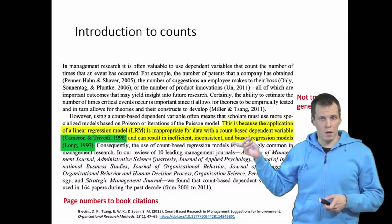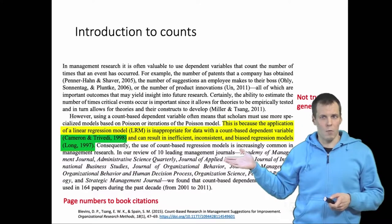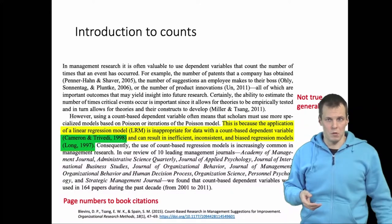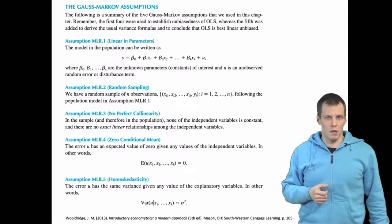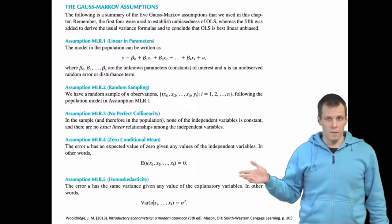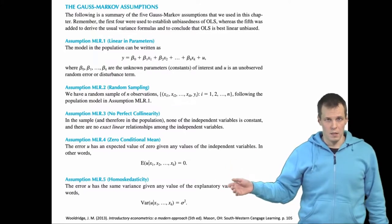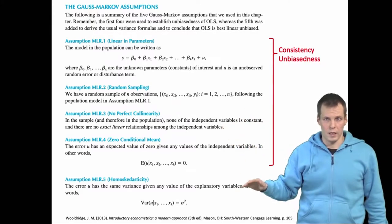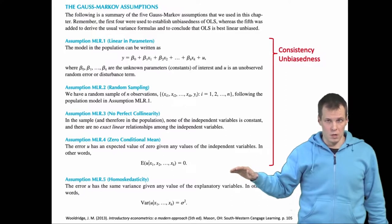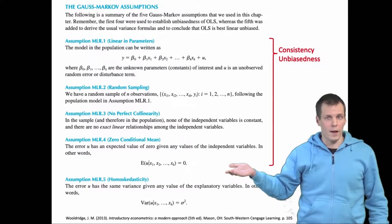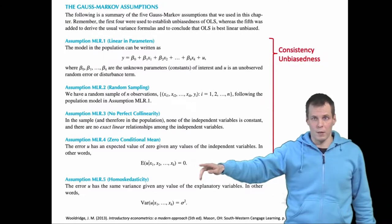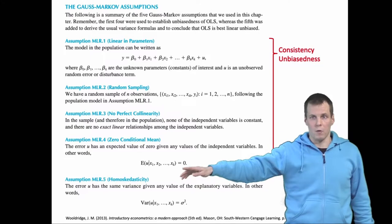To understand why using counts could or could not be a problem for regression analysis, let's review the regression assumptions. From Woolridge's book, regression analysis assumes four things for unbiasedness and consistency: a linear model, random sampling, no perfect collinearity, and no endogeneity. There is nothing about the dependent variable needing to be non-count here — nothing about the distribution of the dependent variable at all.